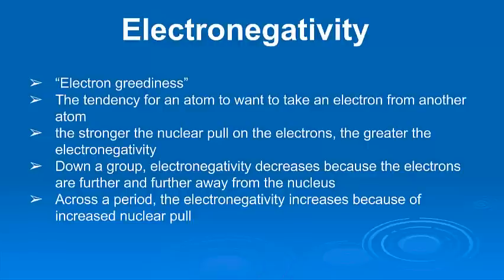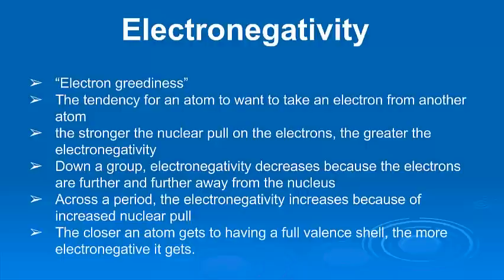Because they're all in the same energy level, but the nucleus is becoming more and more positive as I go across. And since that's the case, the further across towards the right I go, the more those electrons are pulled in, the more electronegative the atom is going to get. Another thing to consider is that the closer an atom gets to having a full valence shell, all the S and all the P electrons, the more electronegative it gets.